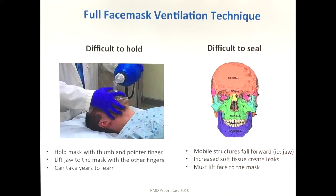Let's discuss full face mask ventilation technique. Historically, we're taught to create a C and E. The C is created using the thumb and index finger, and the E is created by using the other three fingers to hold the mandible nice and tight. We're taught to lift the face to the mask, because pushing the mask down into the face causes the jaw to fall forward, which worsens the patient's upper airway obstruction by allowing the tongue to fall back into the soft palate and the soft palate to fall back into the retropharyngeal space.